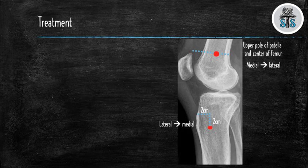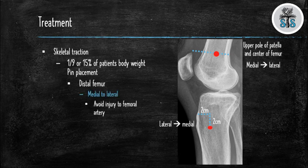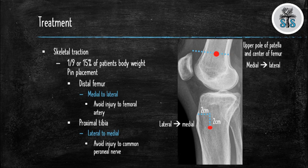You may need to place skeletal traction temporarily for open or severely displaced femoral shaft fractures. You should attach no more than one-ninth or 15% of the patient's body weight to the pins. There are two locations for traction pin placement: the distal femur or the proximal tibia. If placing a pin in the distal femur, you should place it medial to lateral to avoid injuring the femoral artery, at the upper pole of the patella and in the center of the femur in the anterior-posterior plane.